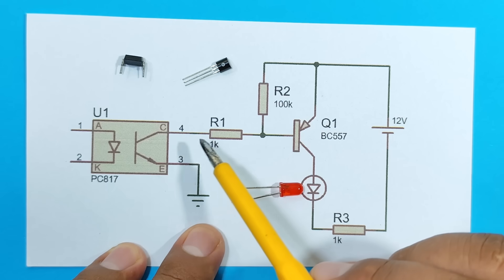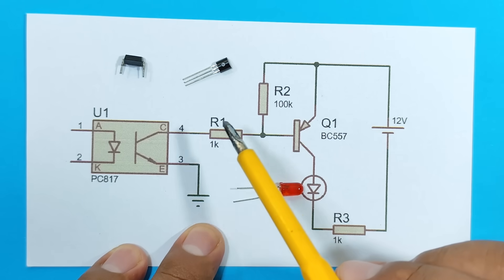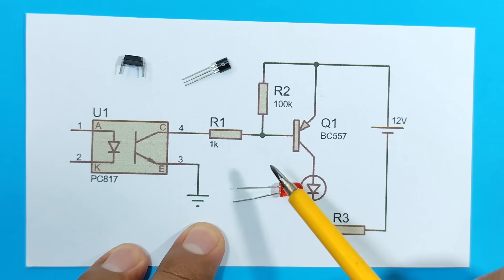But remember that this resistance is very high, so large that it only allows a very small amount of current to pass through. That current isn't enough to light an LED.